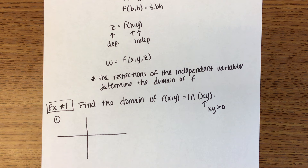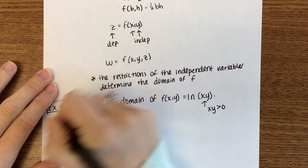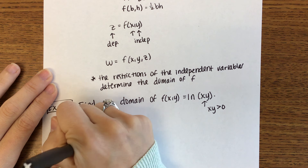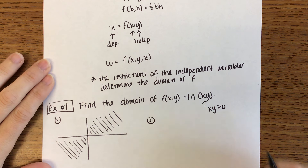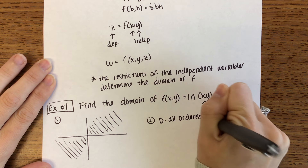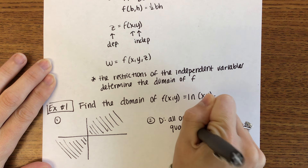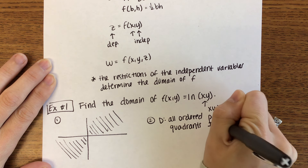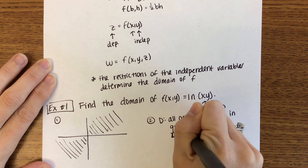There are three different ways to show the domain. One is in a picture. If we look at a coordinate plane, where are our allowable points? xy greater than zero is satisfied in the first and third quadrant, but not on the axes. So the domain in words is: all ordered pairs in quadrants 1 and 3, but not on the axes.